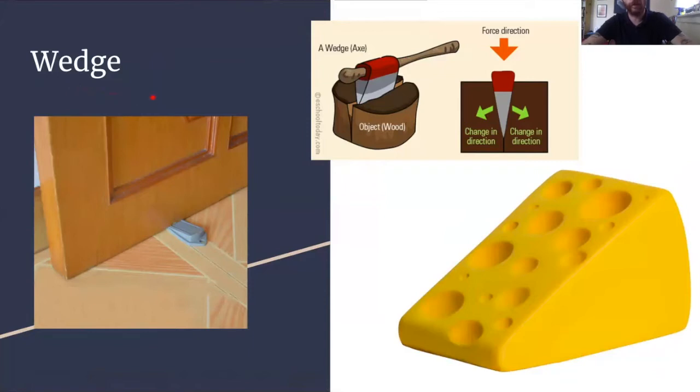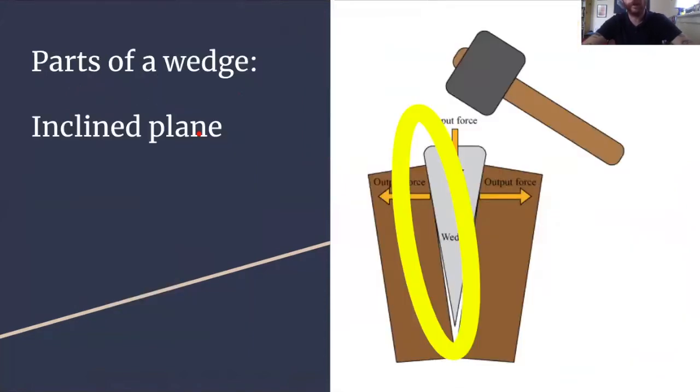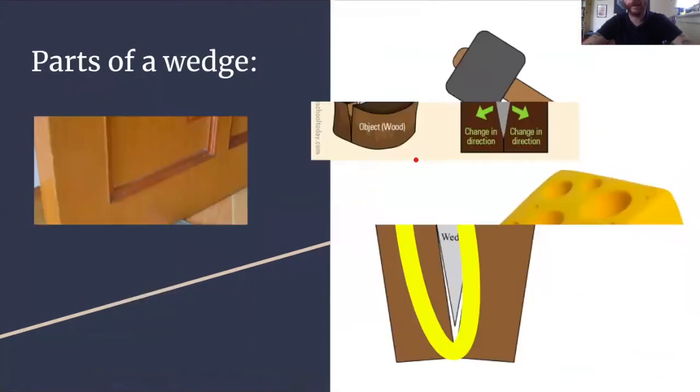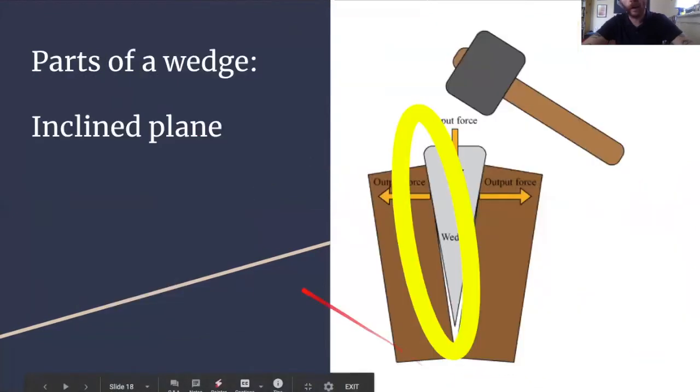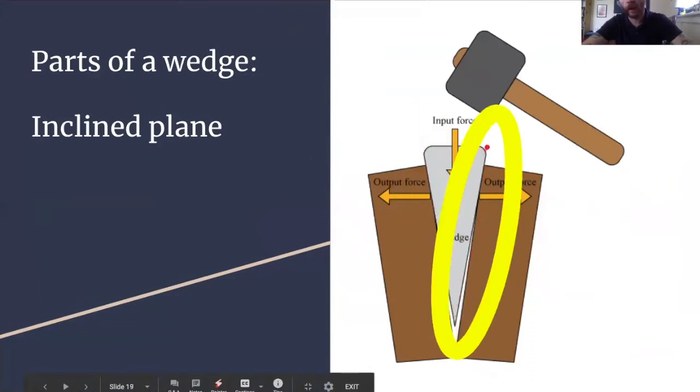A wedge is a tool that consists of two inclined planes. It's normally shaped like a triangle, like this wedge of cheese here, and it has one inclined plane on one side and another on the other side.